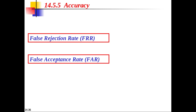Regarding accuracy, there are two types: False Rejection Rate (FRR) and False Acceptance Rate (FAR). FRR measures how often a person who should be recognized is not recognized by the system — it is the ratio of false rejections to the total number of attempts. FAR measures how often a person who should not be recognized is recognized by the system — it is the ratio of false acceptances to the total number of attempts.